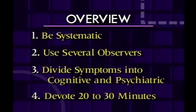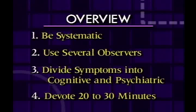When you're getting the history and doing the physical on these patients, keep a few things in mind. First, you have to be systematic — make sure you go through all parts of the assessment. Secondly, try to use several observers. Remember, the patient may be forgetful and cannot remember they're having these difficulties, so you may want to talk to one or two family members who know the patient particularly well. Thirdly, from the conceptual basis, you may want to divide the symptoms into cognitive and psychiatric, because on the management side you're going to treat them differently.